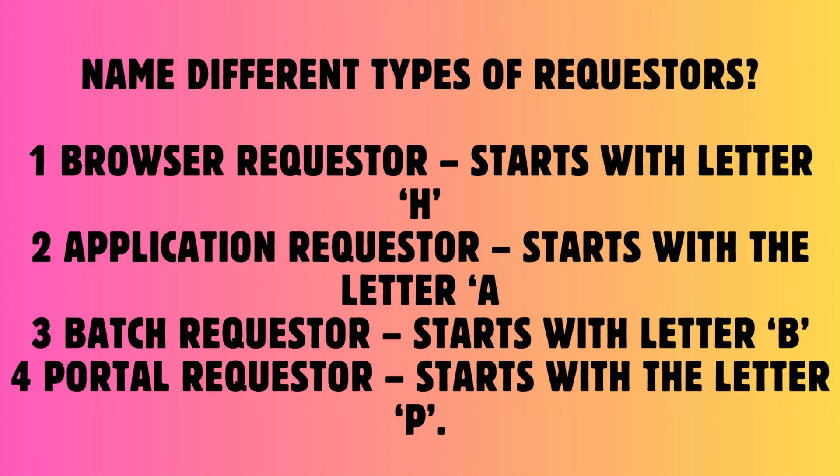Question: Name different types of requesters. Answer: 1. Browser requester — starts with letter H. 2. Application requester — starts with the letter A. 3. Batch requester — starts with letter B. 4. Portal requester — starts with the letter P.